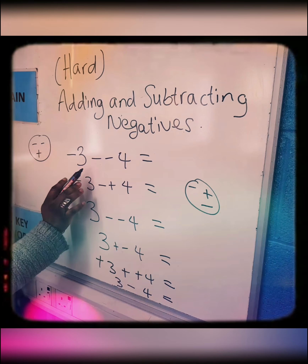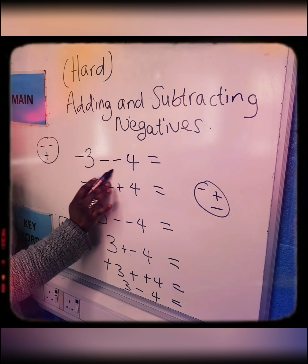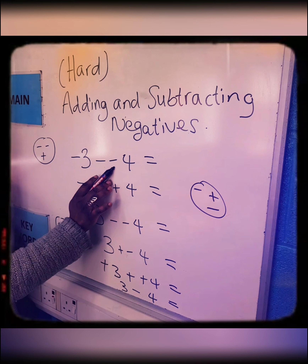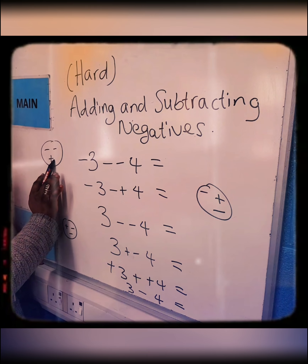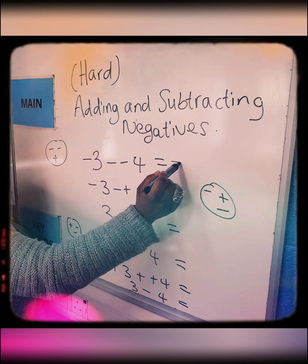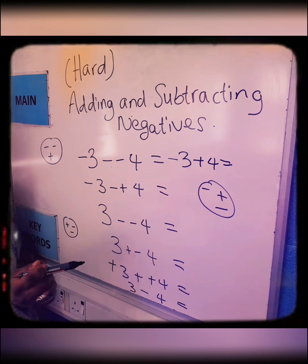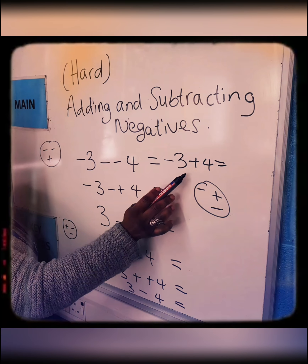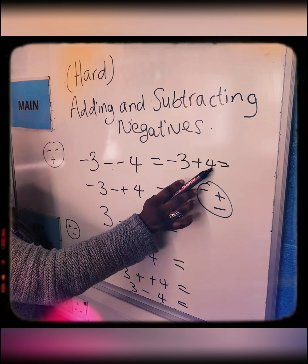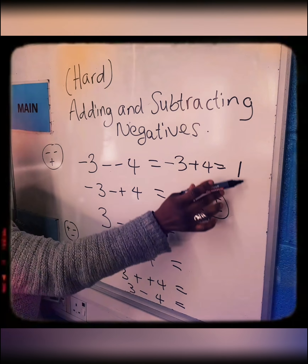This is the hard adding and subtracting negatives. When you have two signs next to each other, that shouldn't be happening in mathematics, so you've got to make them one symbol. When the two signs are the same, it becomes a plus. So this becomes minus 3 plus 4. You're owing 3 pounds but you've got 4 pounds on you — if you pay off your 3 pounds, you've still got one pound with you. The one pound is yours, so it's a positive one.